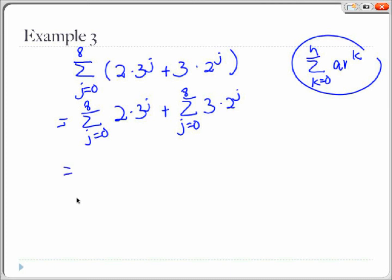So we just write out the two separate formulas and add them together. So we have 2 times 3 to the 9th minus 1 over 3 minus 1 plus 3 times 2 to the 9th minus 1 over 2 minus 1. And we get 21,215.